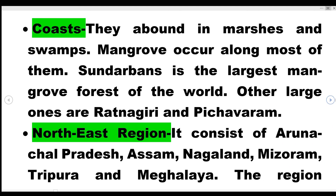The next region is the Coasts. They abound in marshes and swamps. Mangroves occur along most of them. Sundarbans is the largest mangrove forest in the world. Ratnagiri and Pichavaram are also notable mangrove sites.